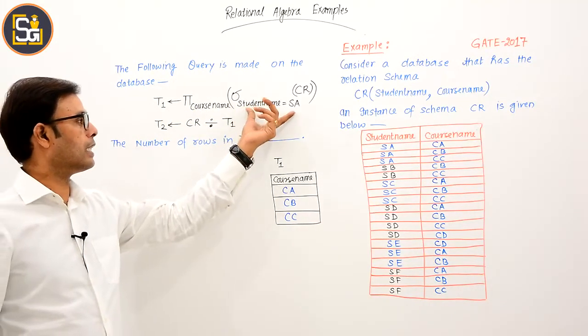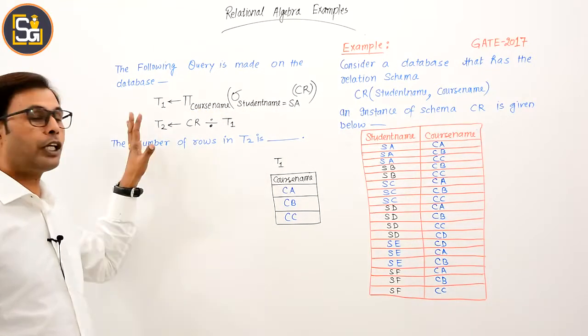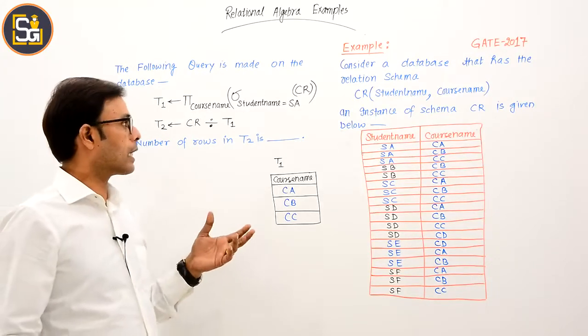And after this, from the resulting relation, course name is selected and projected. This is stored in T1. Let's do this operation.